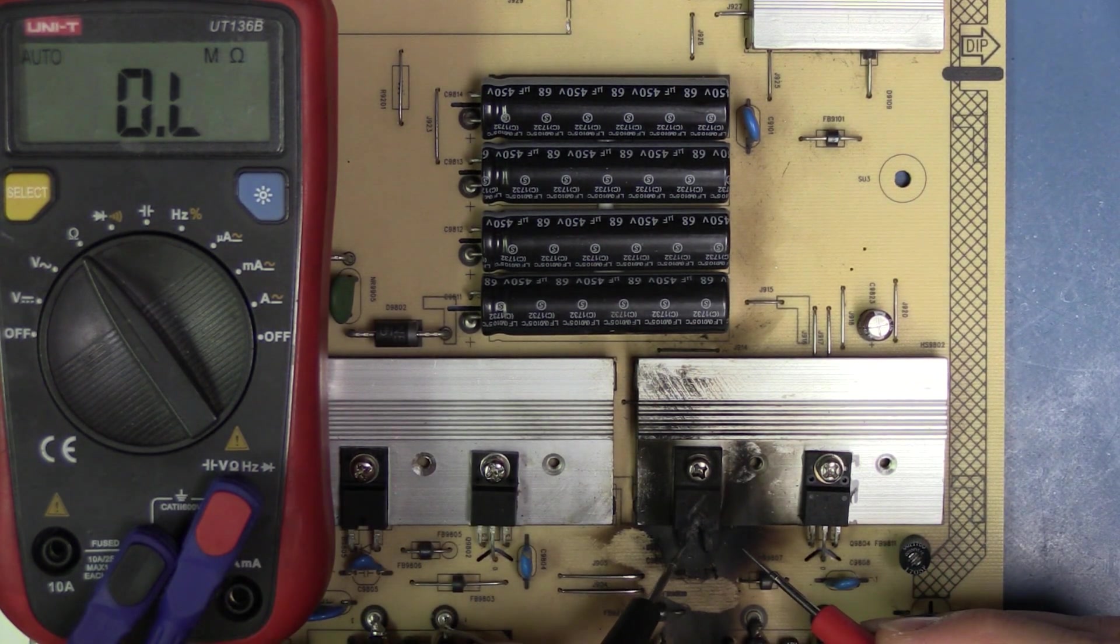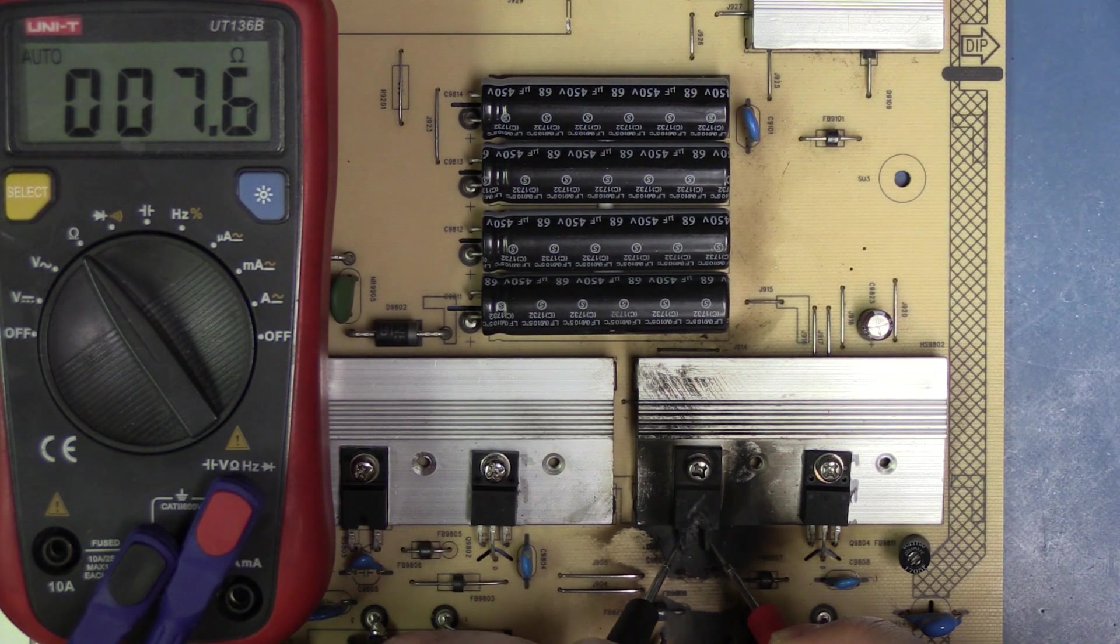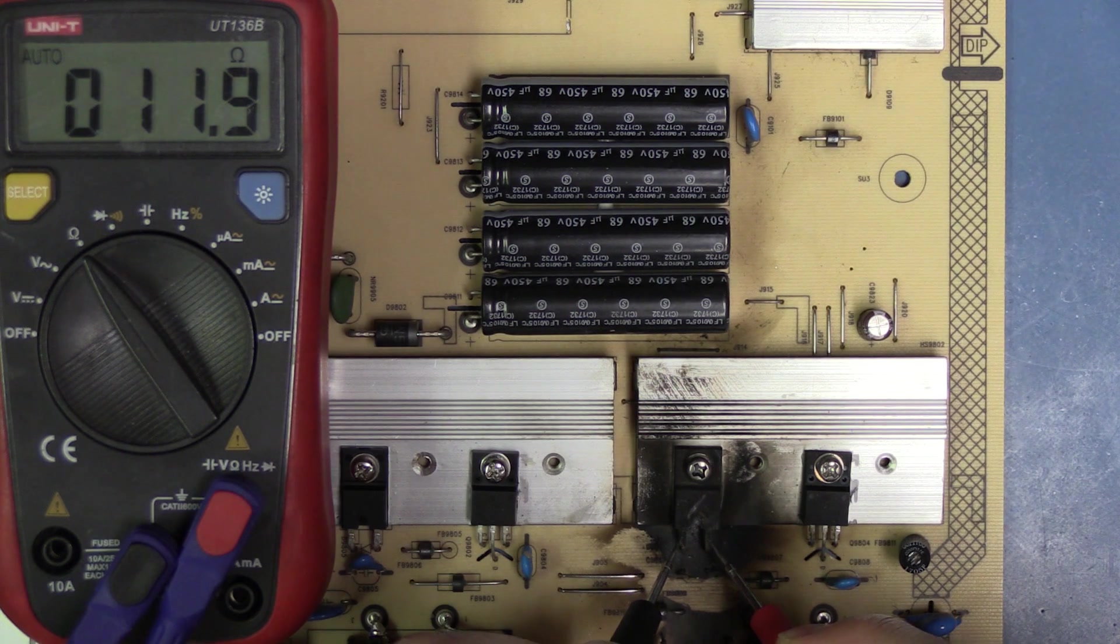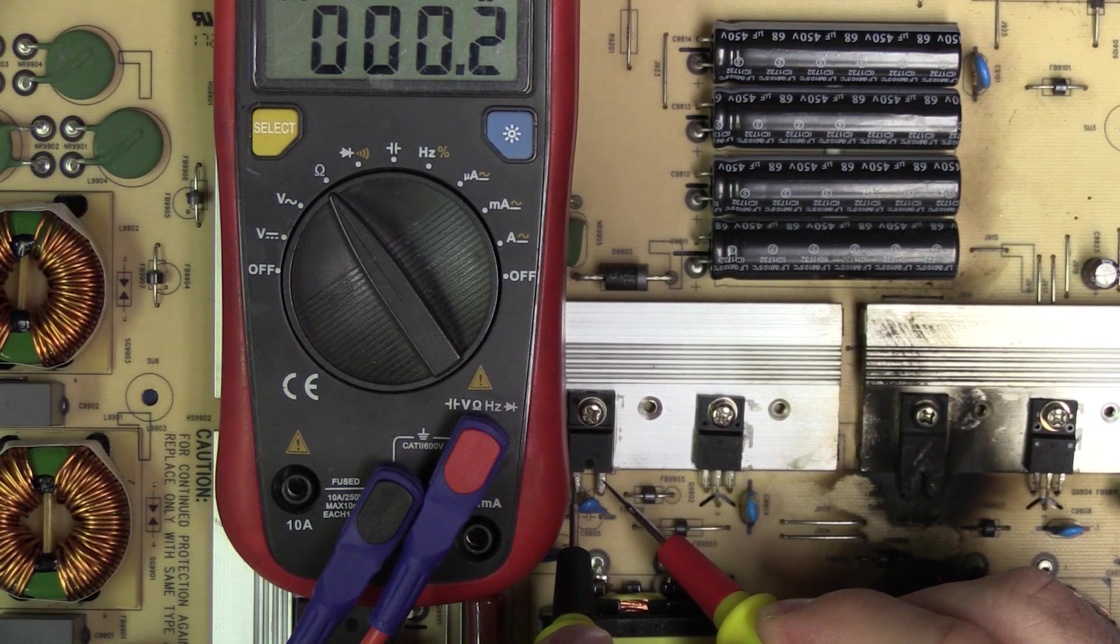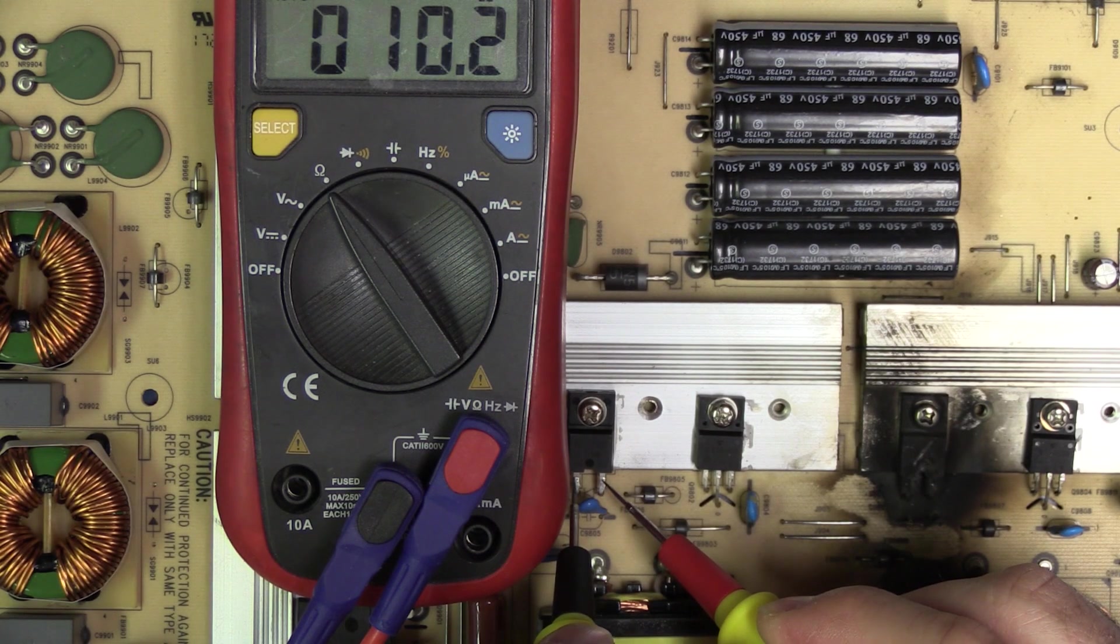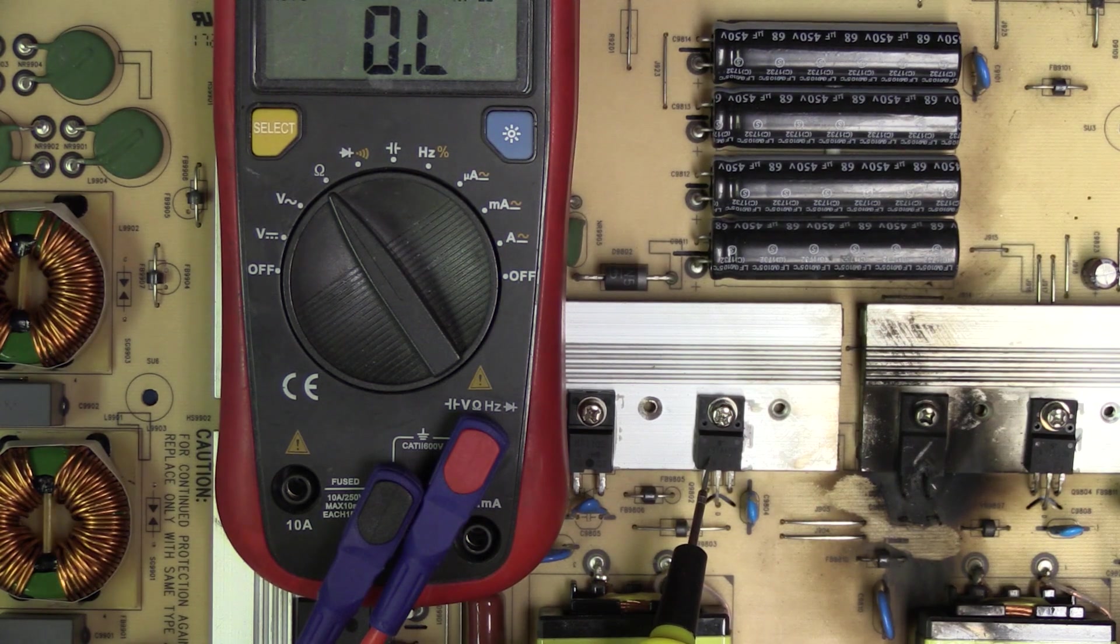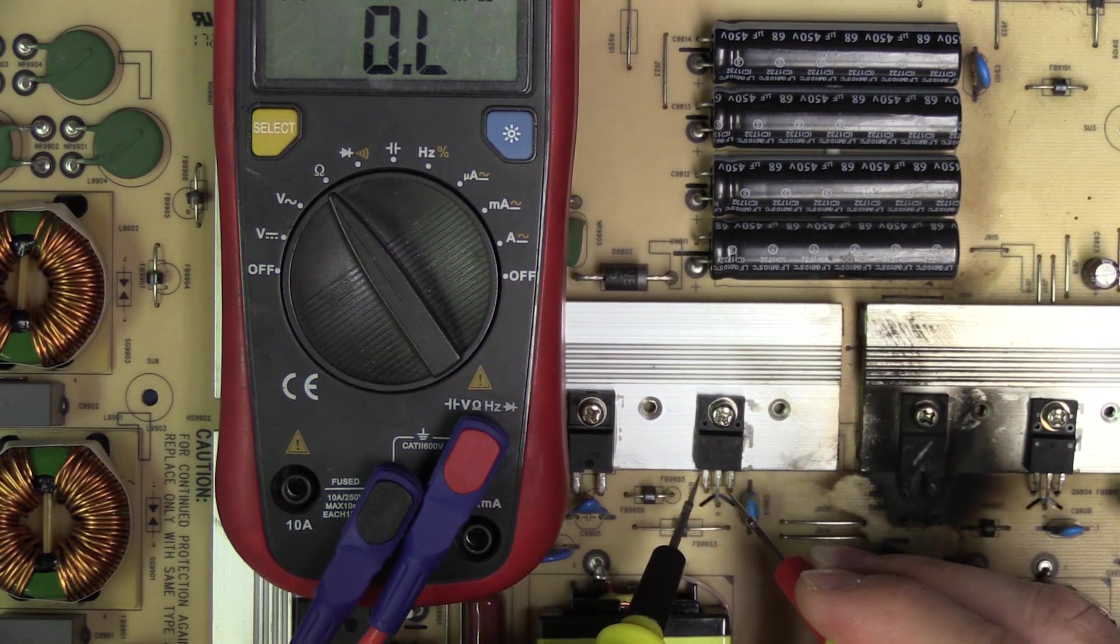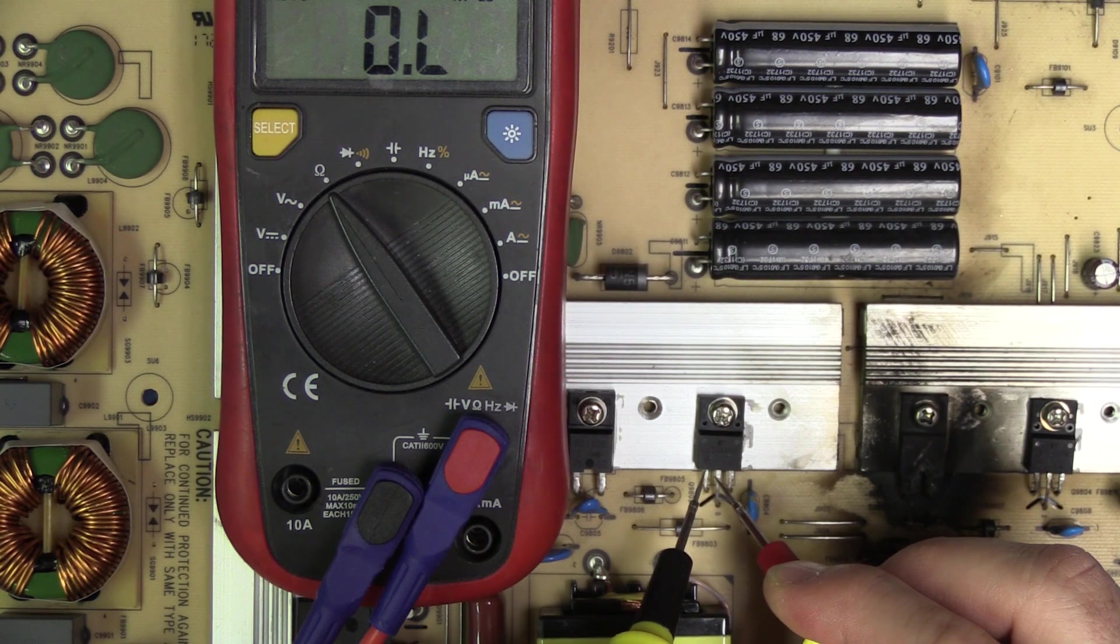This one is physically obviously damaged, so we'll replace it. We're getting about 10, 11, 12 ohms. This one over here is in parallel so I assume the same resistance will appear. Yep, about 12 ohms. I believe one of the legs of this transistor is shared with this diode, so this one might actually be affected.